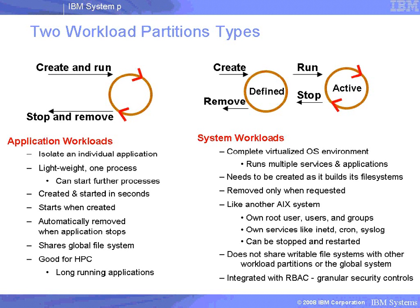The alternative is an application workload partition — a workload partition that is built around an individual application. When we start that application, we create a workload partition around it, and as soon as that application stops, the workload partition is also removed. The process that we start can, of course, start other sub-processes, and it can exist for quite a long time. A typical example is high-performance computing, where you have a group of processes that will run for perhaps three or four weeks. One of the nice features is that we can actually checkpoint these workload partitions, hibernate them, temporarily stop them, move them out of the way, perhaps run another more important workload, and then restart exactly where they stopped.